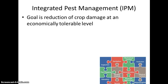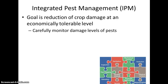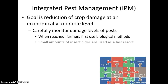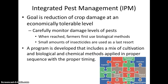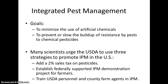The last topic is integrated pest management. The goal is to reduce crop damage to an economically tolerable level by combining a chemical program with some of the alternative methods we discussed. The first step is to monitor the damage level of pests. Then use biological methods first. Only as a last resort should small amounts of chemical pesticides be used, following proper timing and sequencing to minimize chemical pesticide use overall.